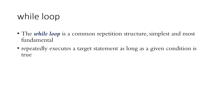The first repetition structure we will discuss is the while loop. The while loop is a common repetition structure — the simplest as well as the most fundamental. It repeatedly executes a target statement or group of statements as long as a given condition is true. A condition is also known as a controlling expression, which we evaluate to determine whether to continue looping or stop the loop.